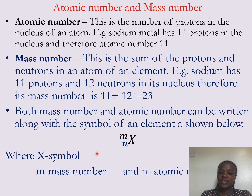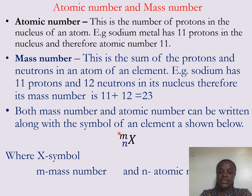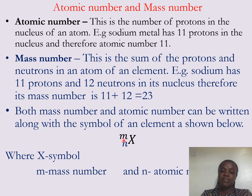Both mass number and atomic number can be written alongside the symbol of an element. For example, for element X, the superscript M represents the mass number and the subscript represents the atomic number. The superscript is the mass number and the subscript is the atomic number.